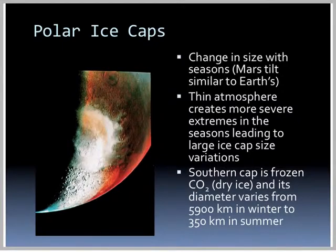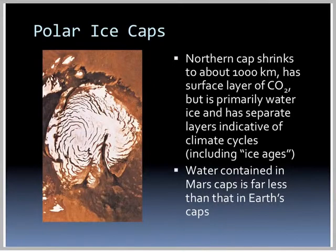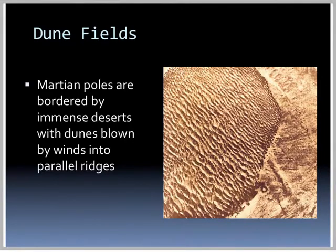The polar ice caps change in size with seasons because Mars's tilt is similar to Earth's. A thin atmosphere creates more severe seasonal extremes, leading to large ice cap size variations. The southern ice cap is mostly dry ice — frozen carbon dioxide — varying from almost 6,000 kilometers in winter to only 350 kilometers in summer. The northern cap shrinks to about 1,000 kilometers and is primarily water ice with a surface layer of dry ice, and has separate layers indicative of climate cycles including ice ages. The water in Mars's caps is far less than in Earth's ice caps.